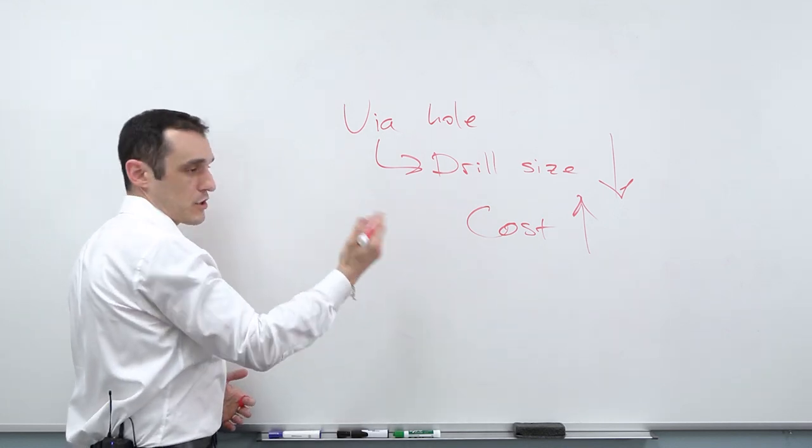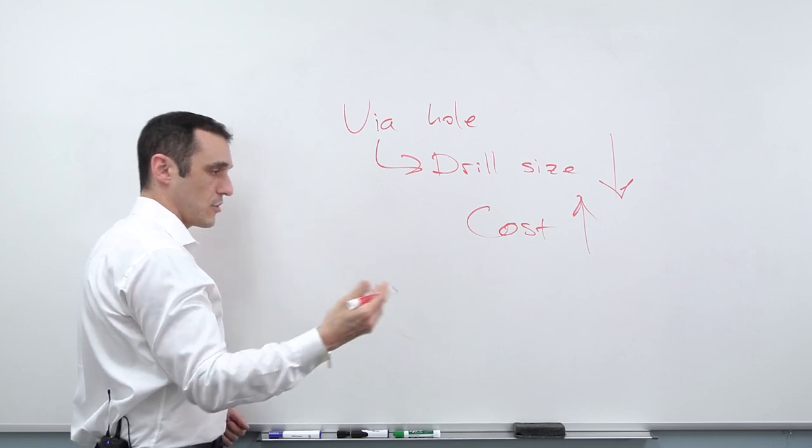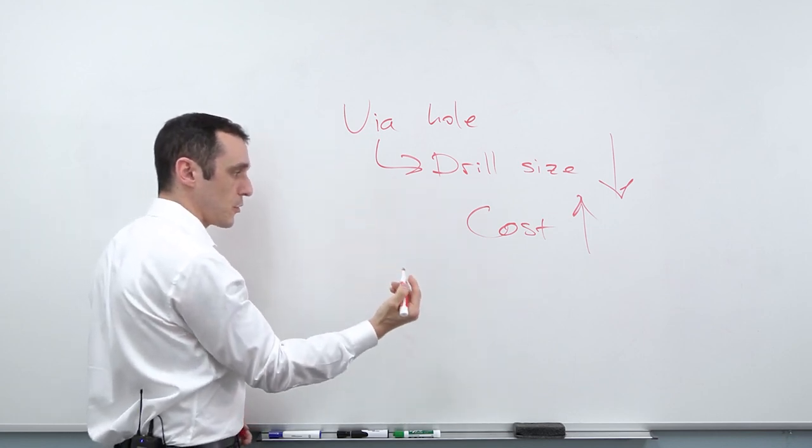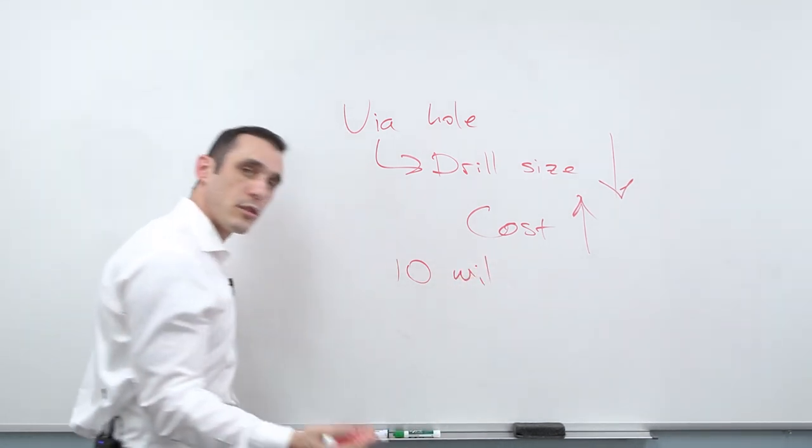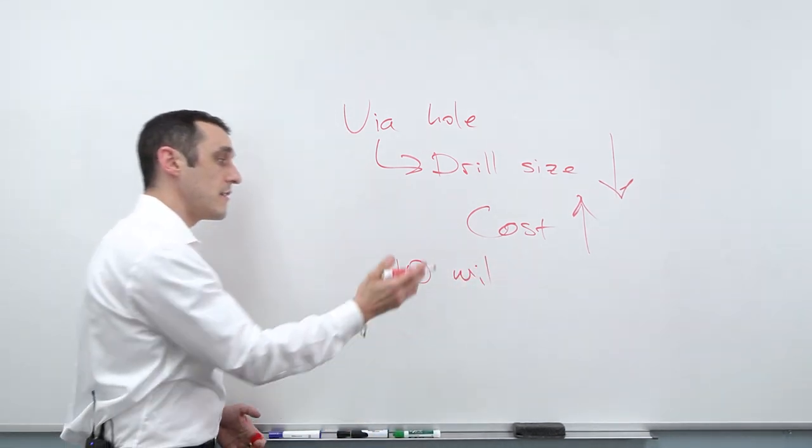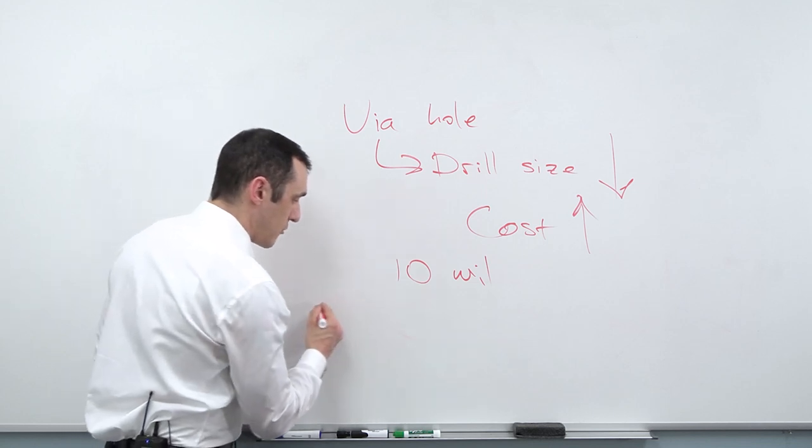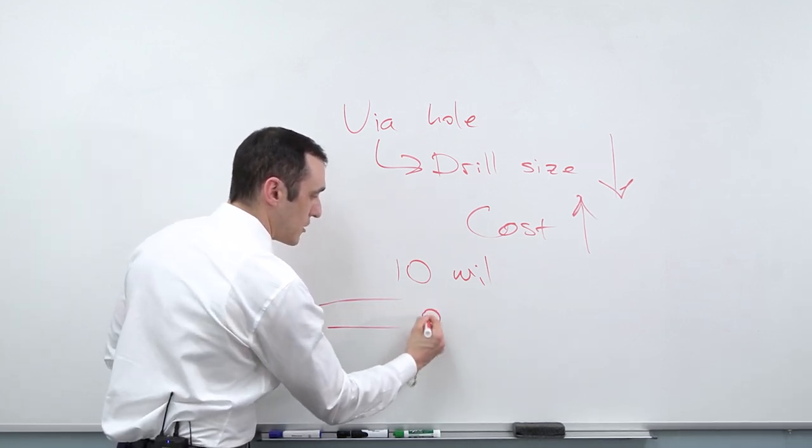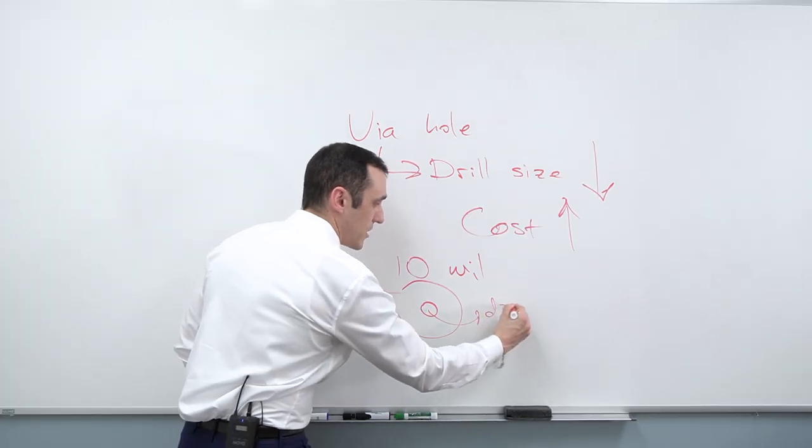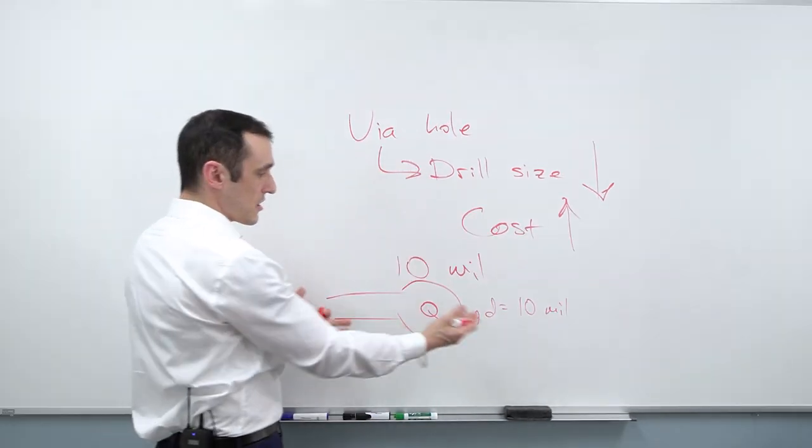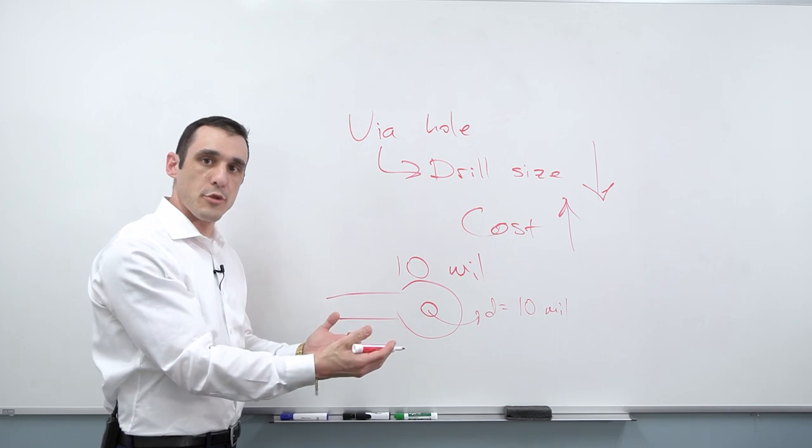One drill size that's a hole size that's generally going to be useful for most PCBs is going to be a minimum of a 10 mil hole size on vias. So specifically, when you have a trace, you're routing into a via and then you have some pad around it, this diameter would then be 10 mils. So this is going to be good for most boards.